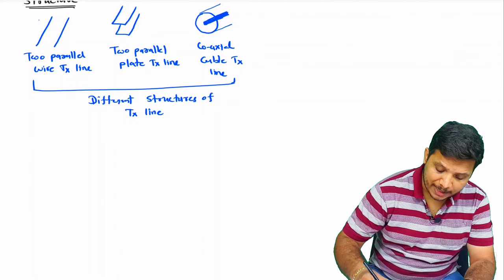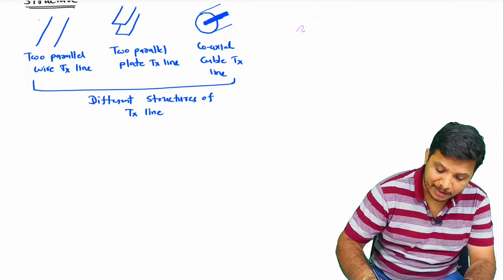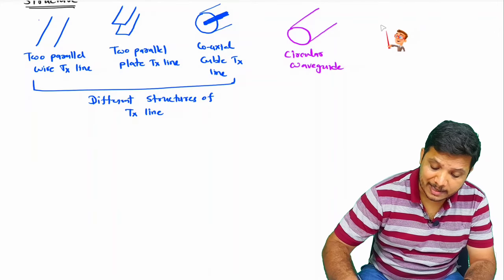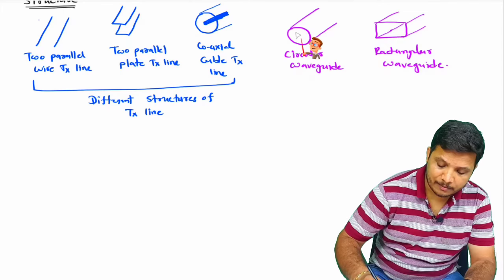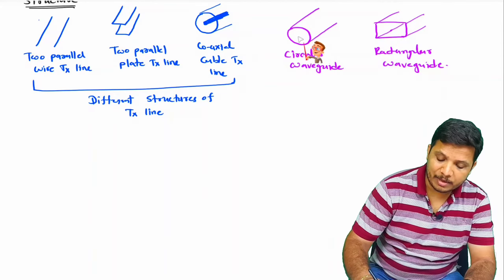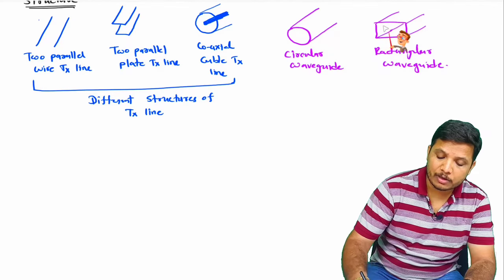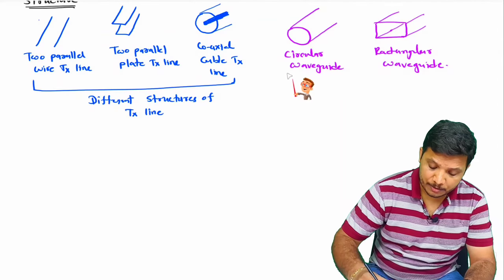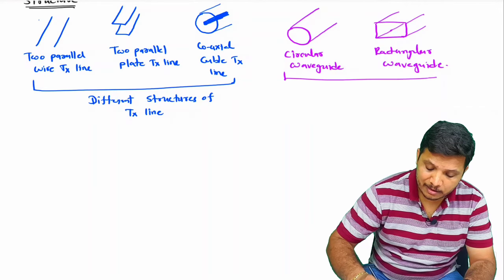Now let us talk about waveguide. In waveguide, there are basically two types: circular waveguide and rectangular waveguide. In waveguide it will be a hollow metallic tube — it can be a circular shaped hollow metallic tube or a rectangular shaped hollow metallic tube. This is how different structures exist with waveguide.